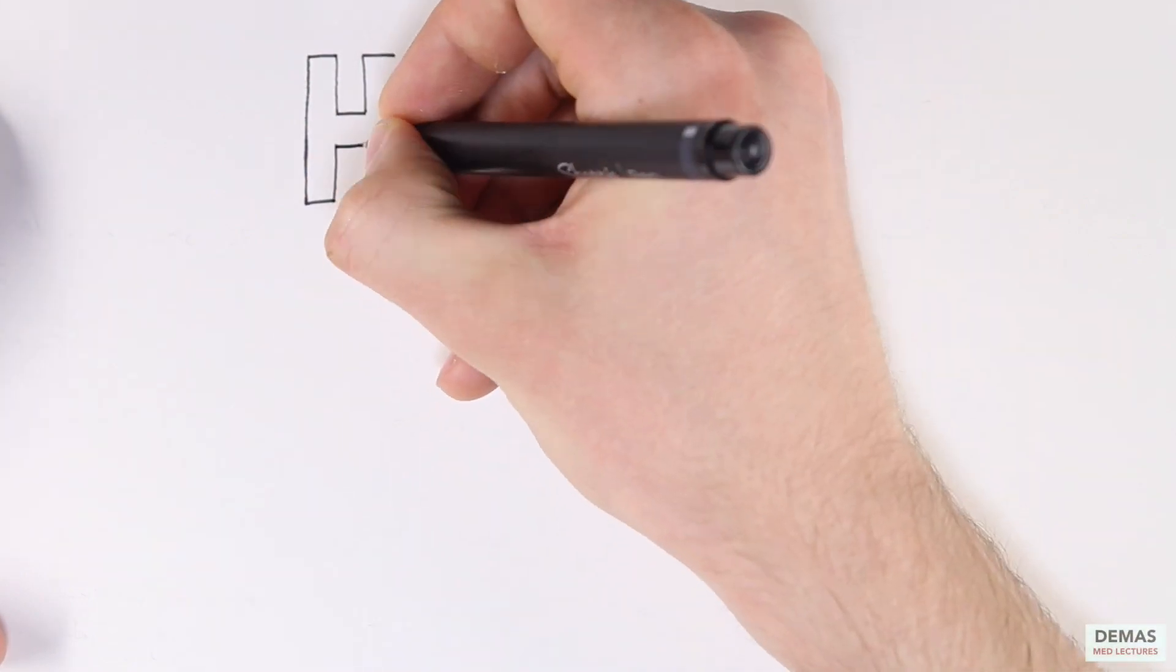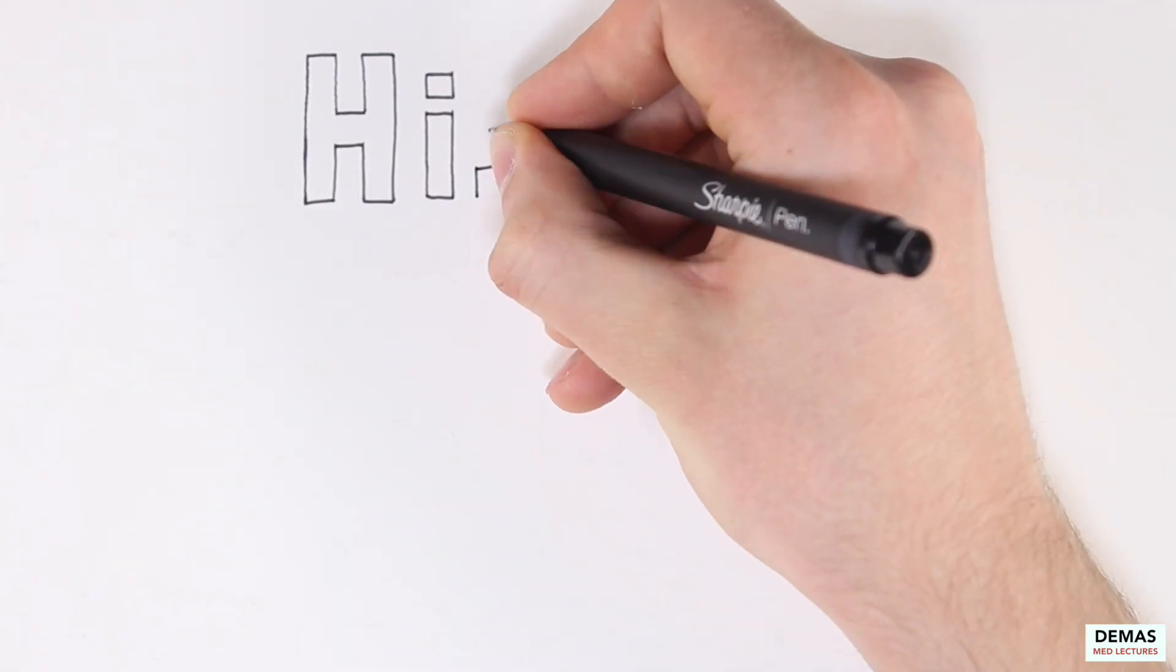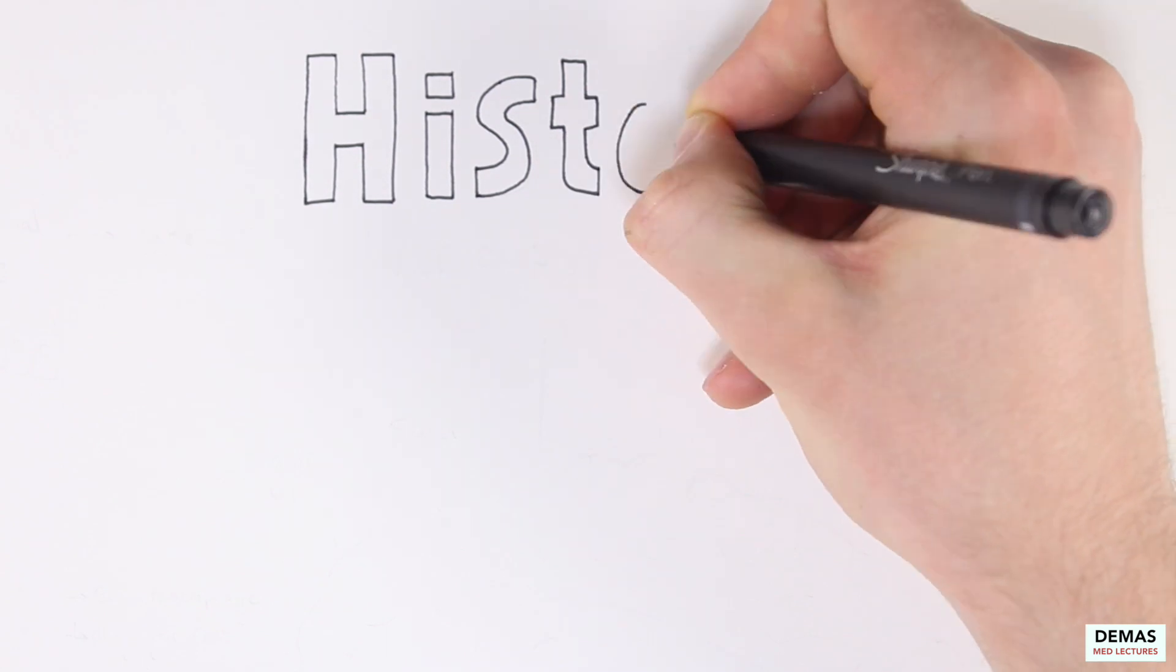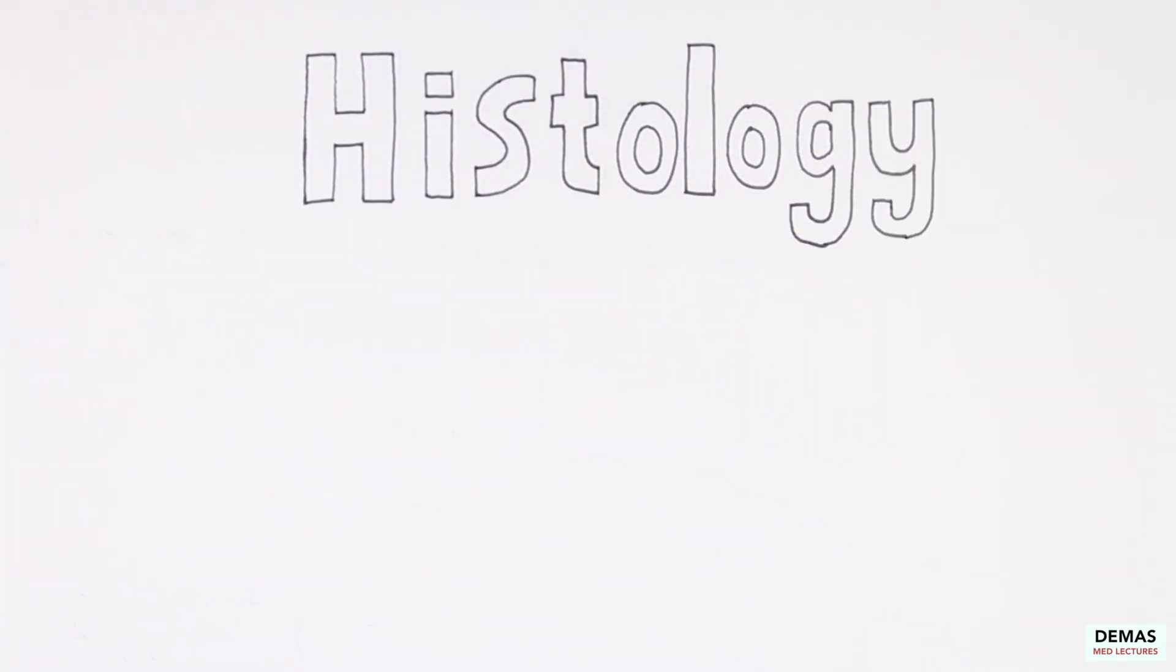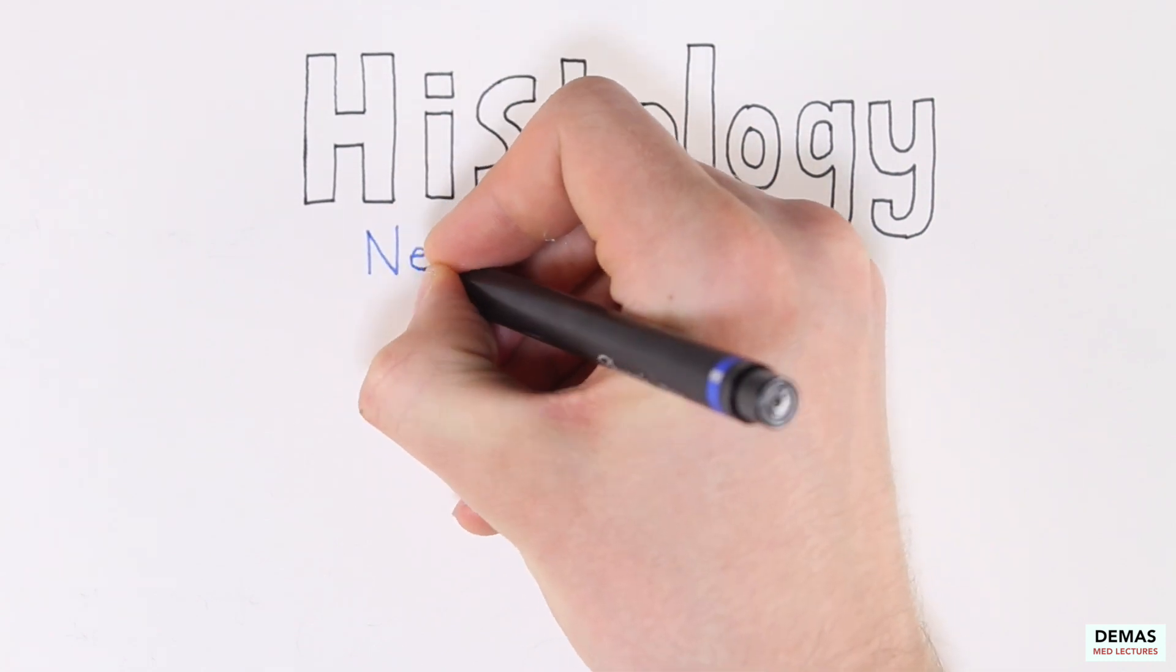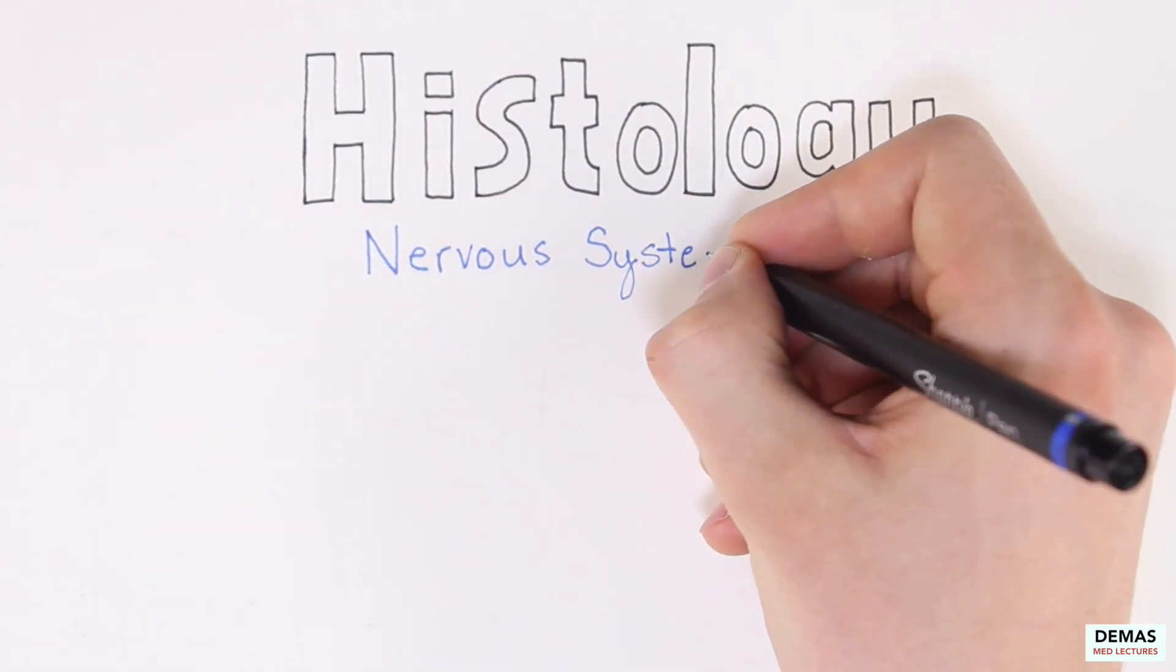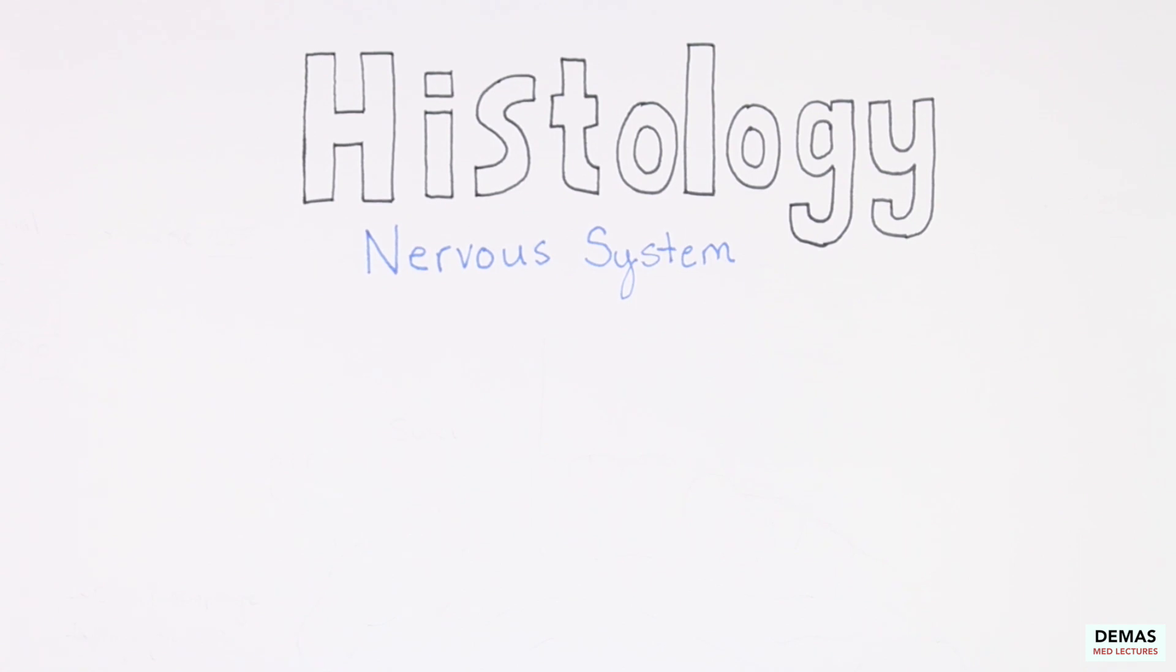Welcome to this video mini-lecture where we will be covering histology topics of the nervous system. My goal is for you to have a better conceptual understanding of the components of the central nervous system and the peripheral nervous system, as well as the location of these important structures. My name is Christopher Demas and I'll be walking you through these topics.